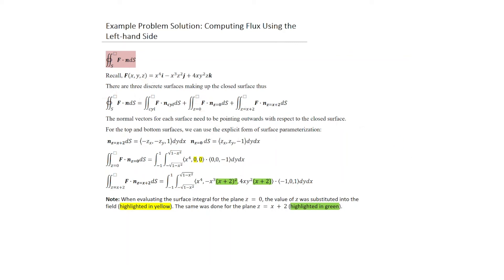For the top and bottom surfaces, we use explicit surface parametrization since z is given as a function of x and y. For the surface z = x + 2, N·dS = (-∂z/∂x, -∂z/∂y, 1) dydx. For z = 0, it's (∂z/∂x, ∂z/∂y, -1). On the upper surface the vector points in the +z direction, and on the lower surface it points in the -z direction, both correctly pointing outwards from the bounding volume.